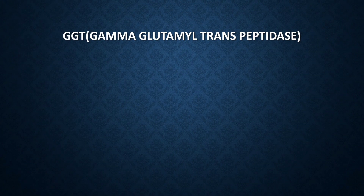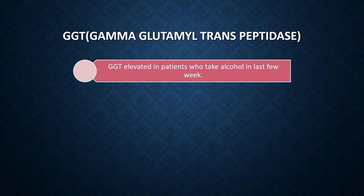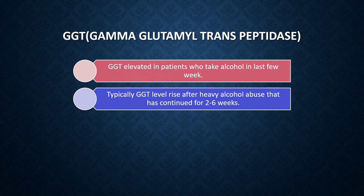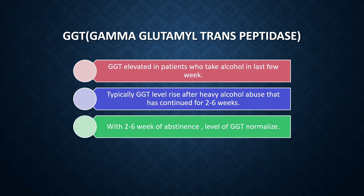The next one is GGT, gamma-glutamyl transferase. GGT is elevated in patients who have taken alcohol in the last few weeks — typically 2 to 6 weeks. The GGT level rises after heavy alcohol abuse continued for 2 to 6 weeks. If a person stops alcohol consumption, GGT gradually decreases and normalizes over 2 to 6 weeks. So GGT is used when an alcoholic patient gives a false history — if GGT is elevated, it suggests the patient had taken alcohol in the last one month.